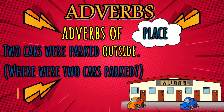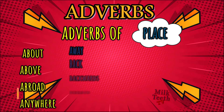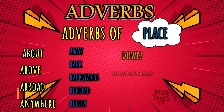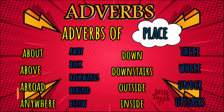Two cars were parked outside — where were the two cars parked? Outside. 'Outside' is the adverb of place. The list of adverbs of place includes: about, above, abroad, anywhere, away, back, backwards, behind, below, down, downstairs, outside, inside, there, where, under, upstairs. Note that all these words are also used as prepositions, but they are prepositions as long as they express the relationship between two objects, nouns, or a pronoun in a sentence. When these words answer the question 'where' for the related verb, they become an adverb.